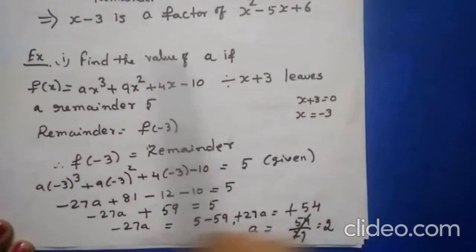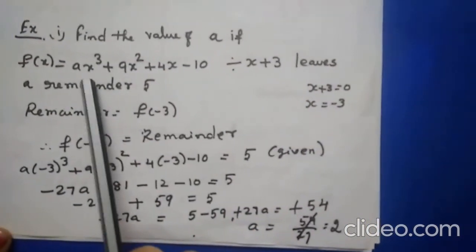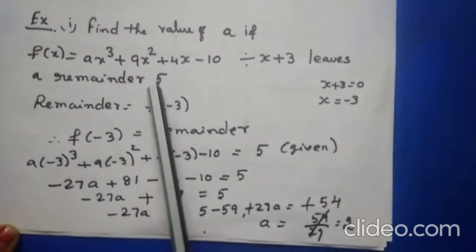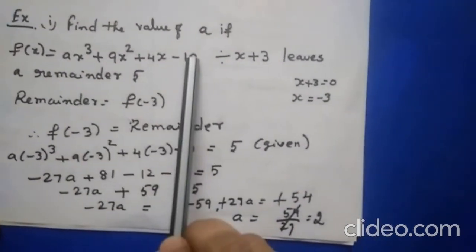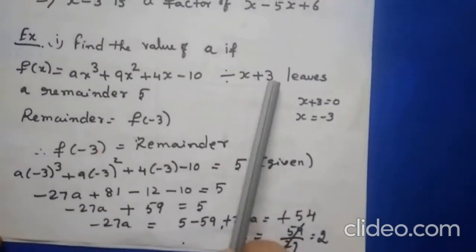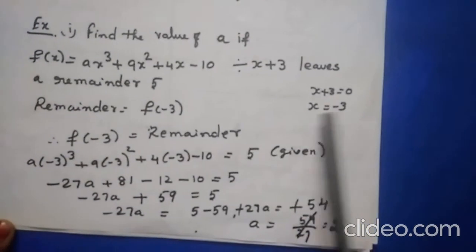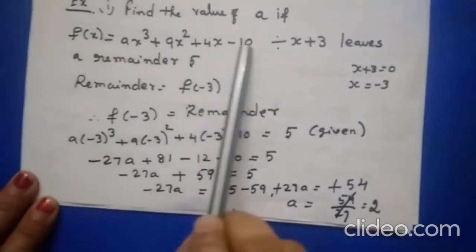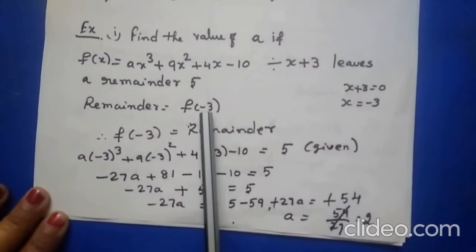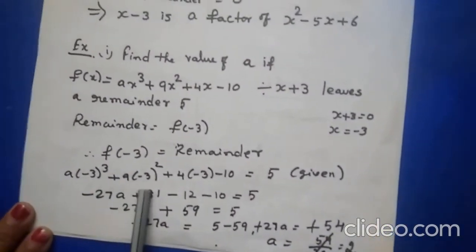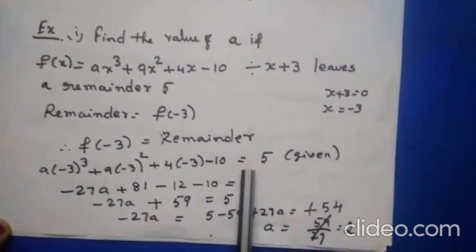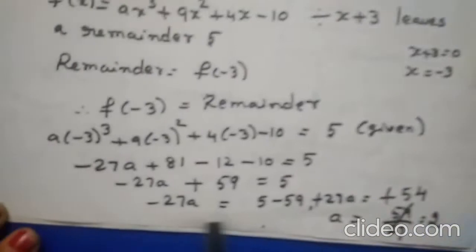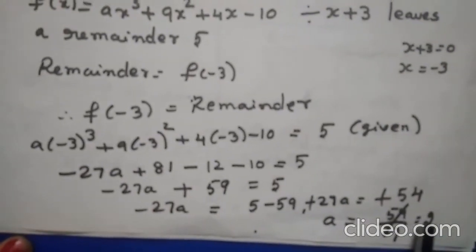Now find the value of a if f(x) = ax³ + 9x² + 4x - 10 divided by x + 3 leaves a remainder of 5. Here x + 3 = 0, so x = -3. The remainder is f(-3) = 5. Substituting: a(-3)³ + 9(-3)² + 4(-3) - 10 = 5. Solving this linear equation, you get a = 2.